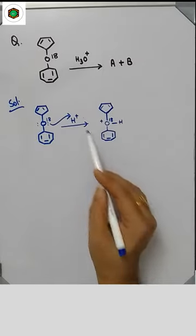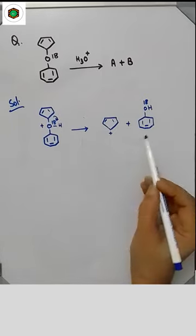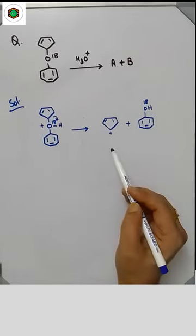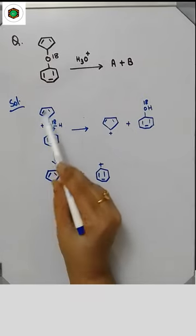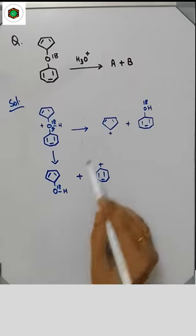Here after protonation we will get this oxonium ion. If the bond will cleave in this direction, we will get this product and this carbocation. If in the oxonium ion the bond will cleave in this direction, we will get this product and this carbocation.